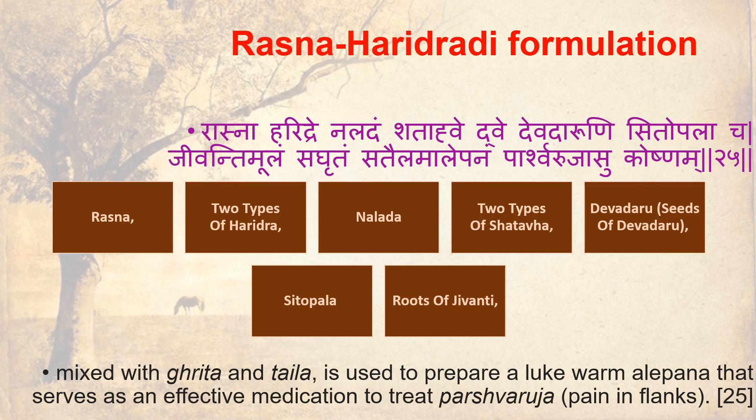Dasna Haridradi Formulation: Dasna, two types of Haridra, Nalada, two types of Shadahua, Devadaru, Sithopala, roots of Jeevandhi — mixed with Grada and Thayla — used to prepare a lukewarm Alaybhana that serves as an effective medication to treat Parshvaru Cha (pain in the sides).